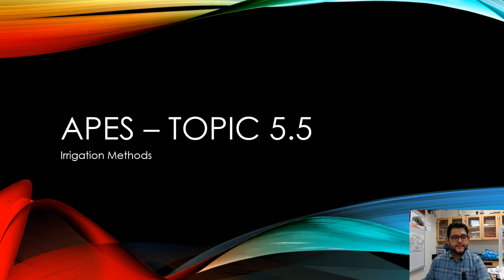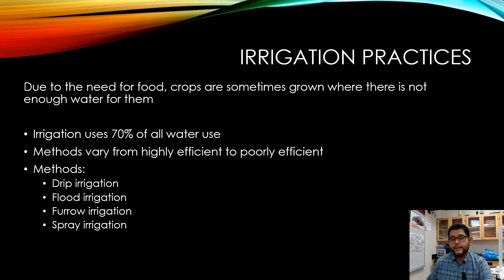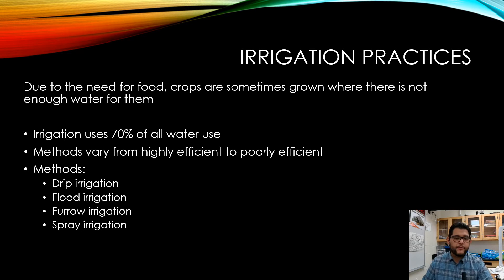Hey guys, this is Mr. V and this is APES review video topic 5.5: irrigation methods. This video is going to be about irrigation because as we need to grow food we have to water our crops — that's something that is pretty much non-negotiable. Crops need water to be able to thrive, and we need that to have our own populations thrive. Right now, irrigation uses about 70% of all water use.